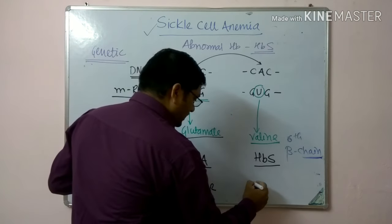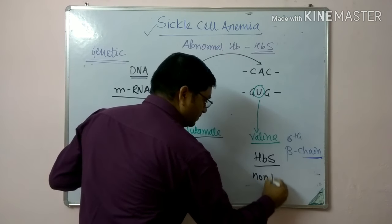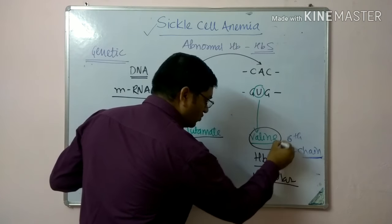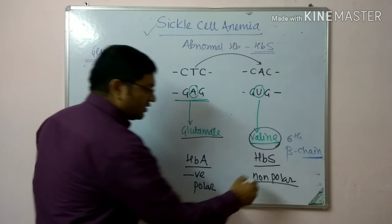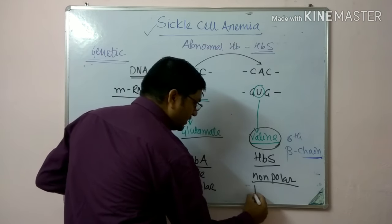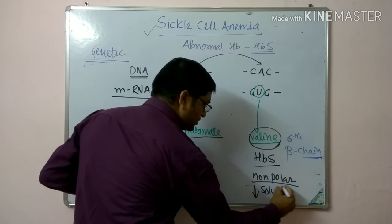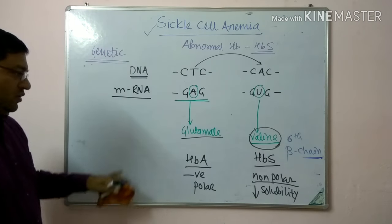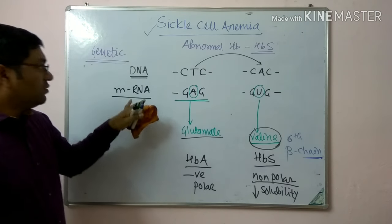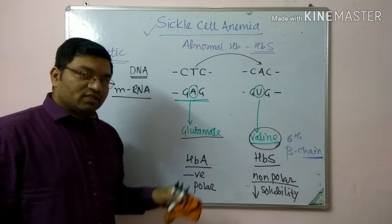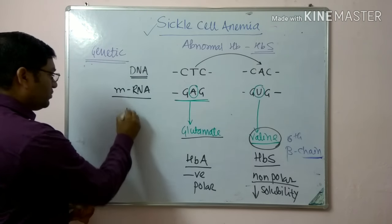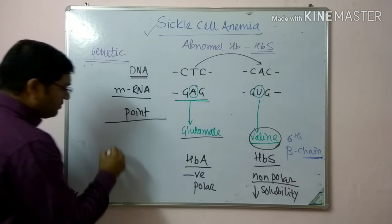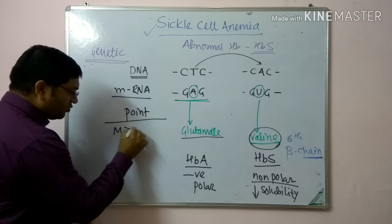Hemoglobin A, due to glutamate, carries more negative charge and is a polar, more soluble hemoglobin. Hemoglobin S is non-polar due to valine, which causes a decrease in the solubility of hemoglobin S. This genetic change is a point mutation — specifically a missense type of point mutation.